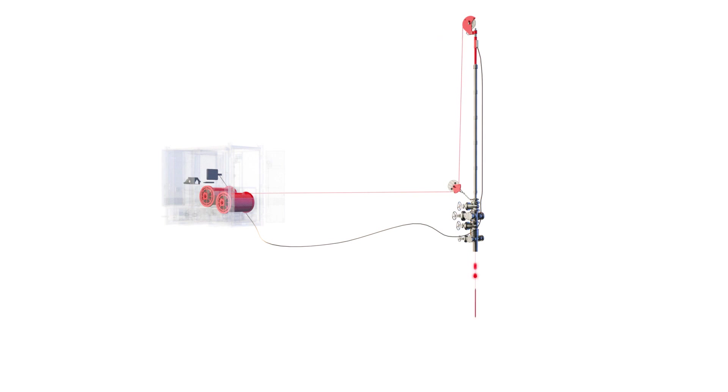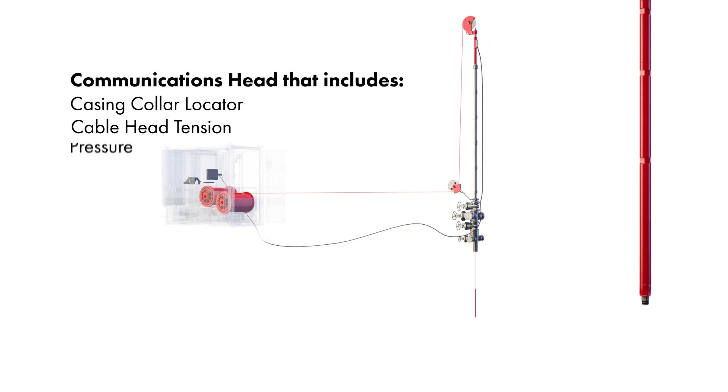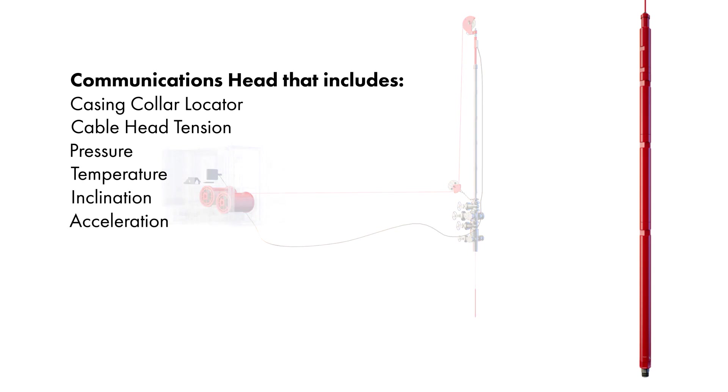The system includes a downhole communications head, which includes casing collar locator, tension, pressure, temperature, inclination, and acceleration.